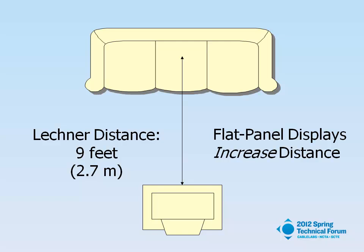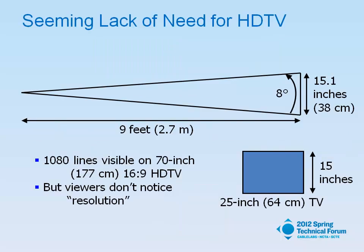It's where that couch is. And if you have a flat panel display, it actually gets bigger. This 9-foot distance was determined by a study that Bernie Lechner at RCA Laboratories did, so it's referred to as the Lechner distance. At about the same time, Richard Jackson at Philips Labs in Red Hill, England, came up with a distance of 3 meters. So whether it's 9 feet or 3 meters, it doesn't matter. But on that basis, there seems to be a lack of need for HDTV.